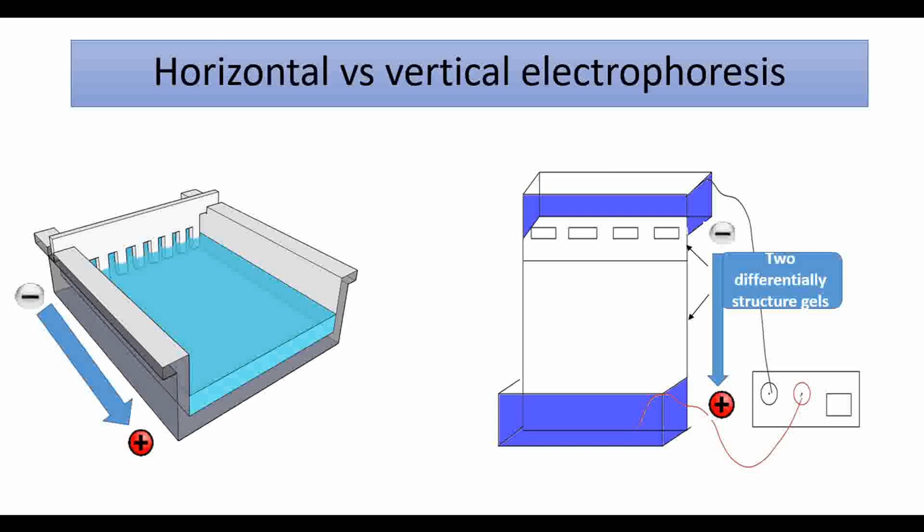Vertical electrophoresis also enables us to use two separated buffer chambers. This ensures that the buffer exclusively flows through the gel, which in turn provides higher separation and improves the resolution. Generally, the first gel is used for stacking and the second gel, which is higher in concentration, is used for separation to improve the separation process.